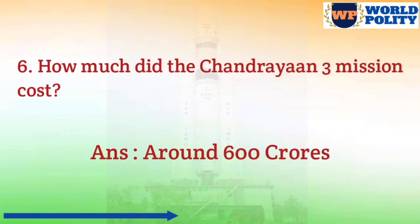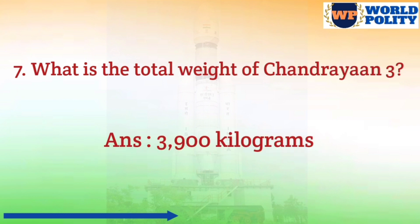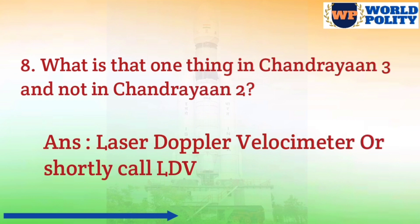Question number 6: how much did the Chandrayaan 3 mission cost? The answer is around 600 crores. Question number 7: what is the total weight of Chandrayaan 3? The answer is 3900 kilograms. Question number 8: what is that one thing in Chandrayaan 3 and not in Chandrayaan 2? The answer is Laser Doppler Velocimeter, or shortly called LDV.